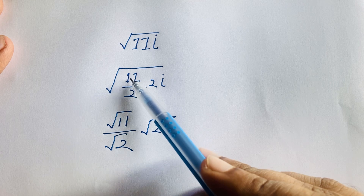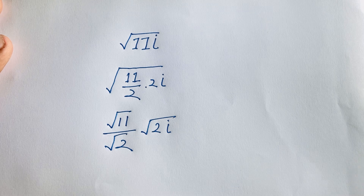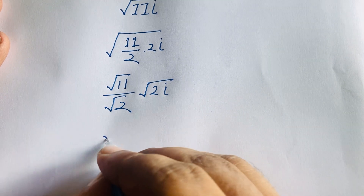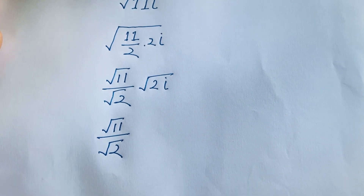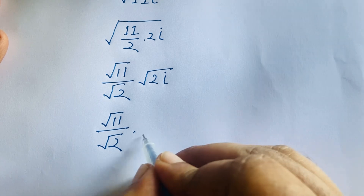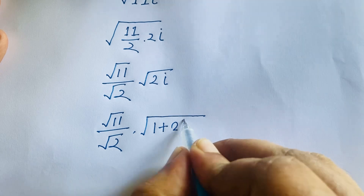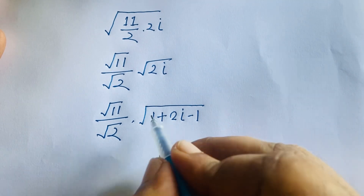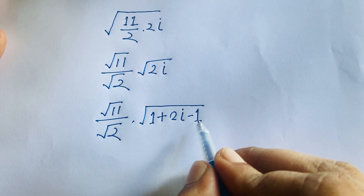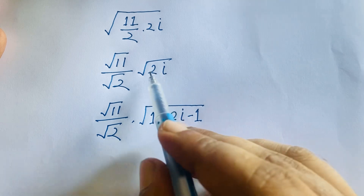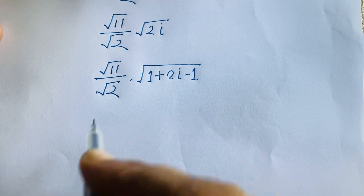So this is square root 11, this is square root 2, and this is square root 2i. Then I can write it as square root of 11 over square root 2, times square root of (1 + 2i − 1). I add 1 and subtract 1, so 1 minus 1 equals 0, and we're left with 2i.